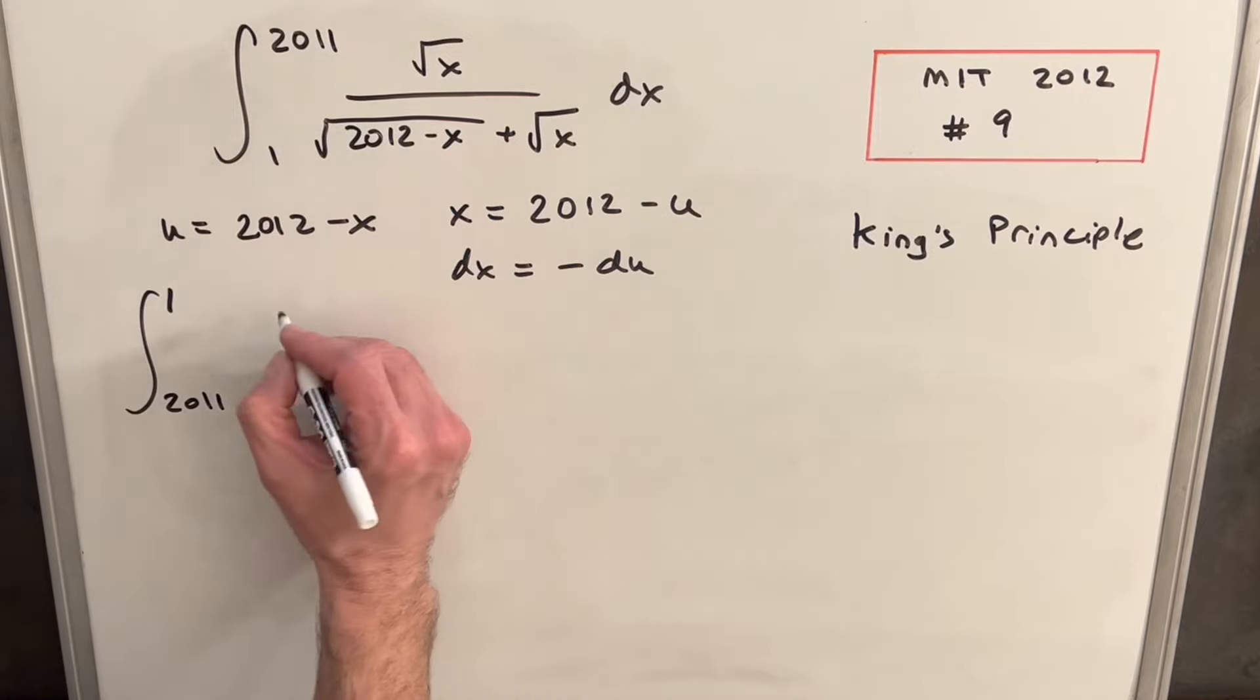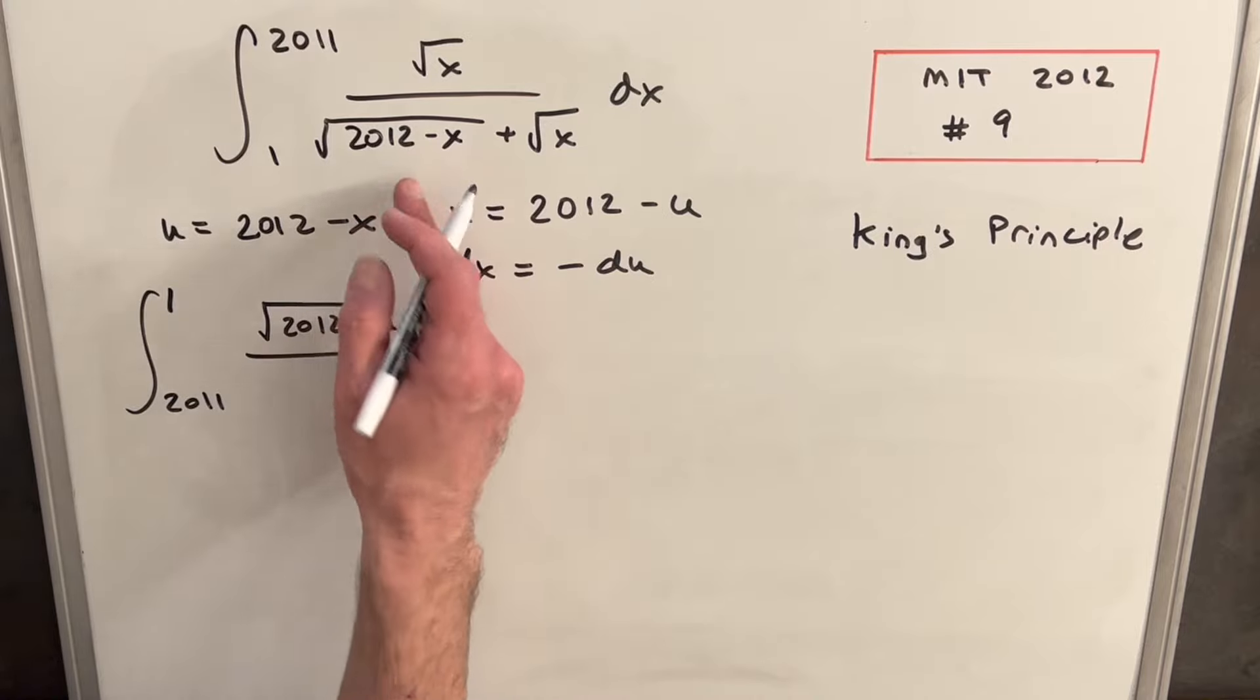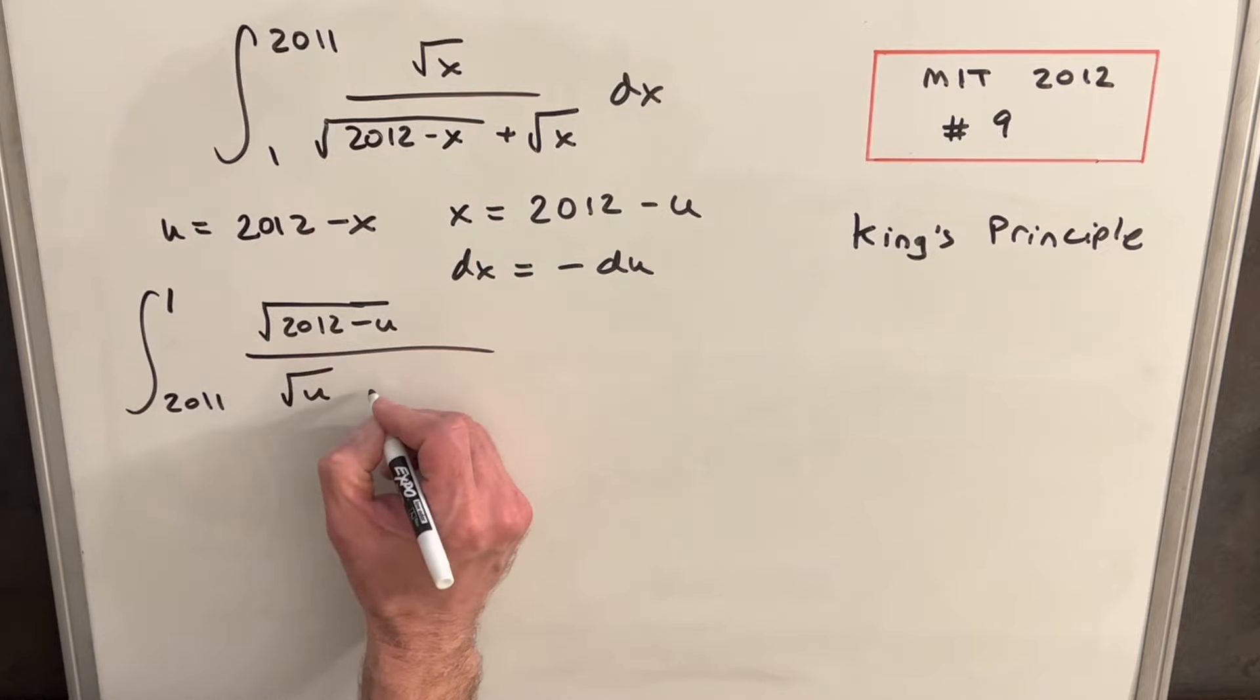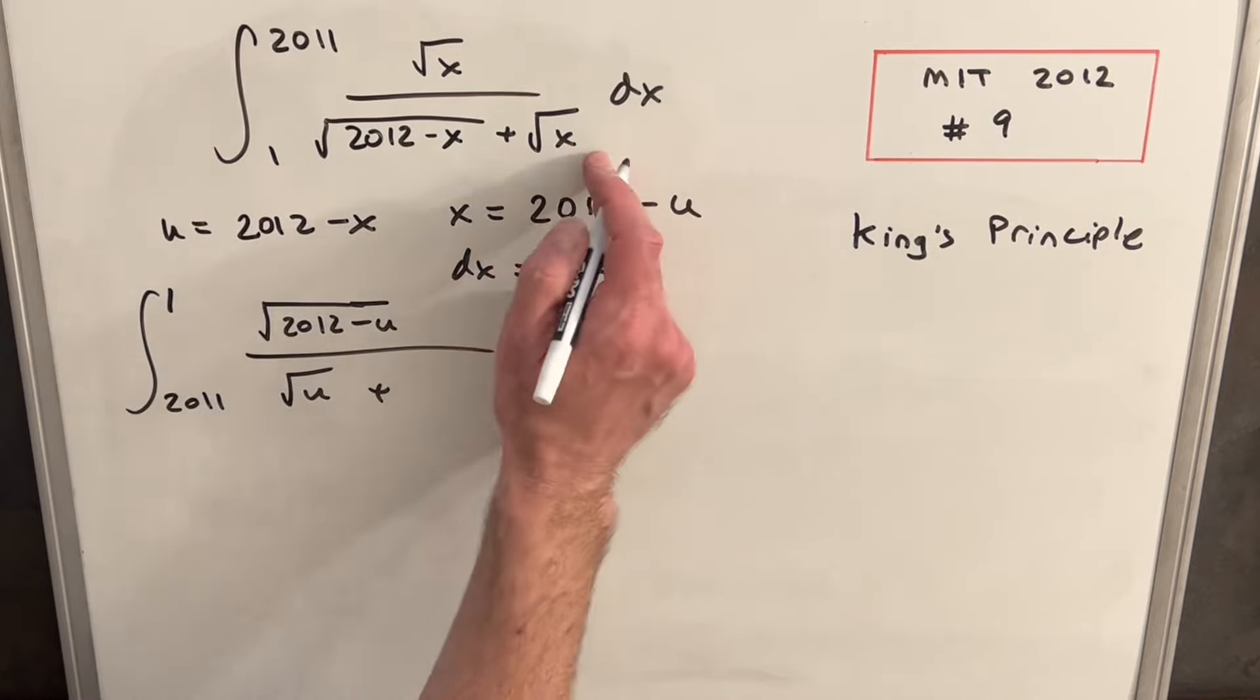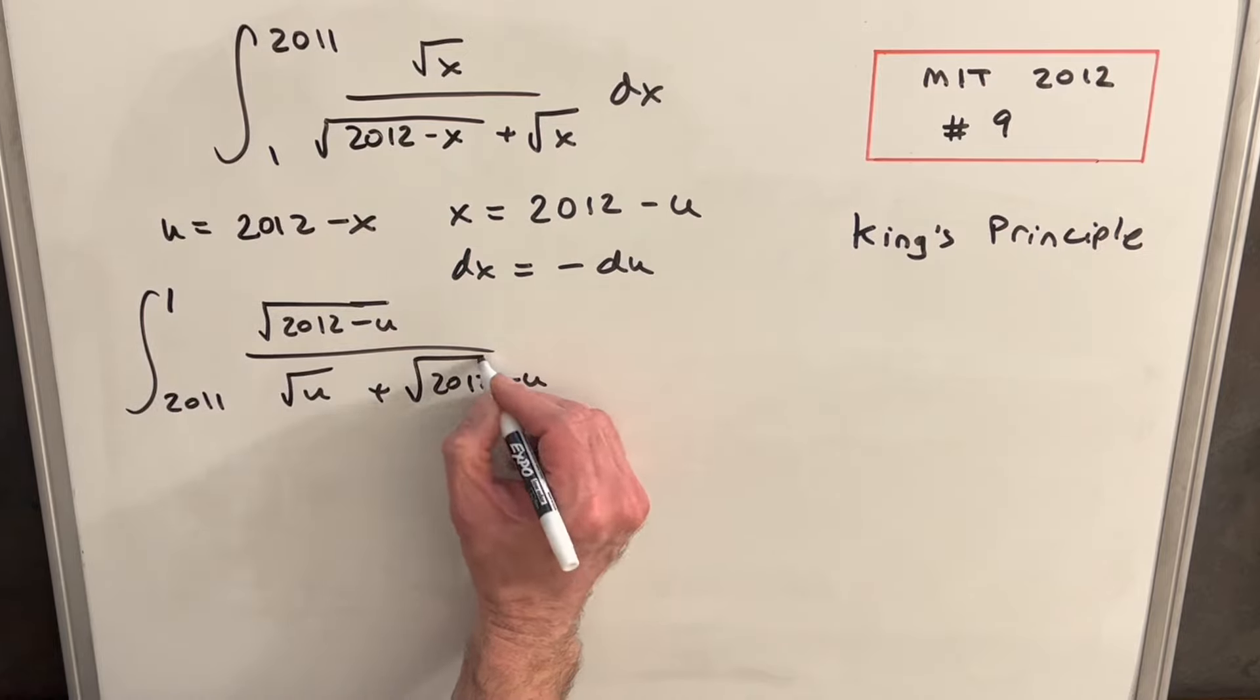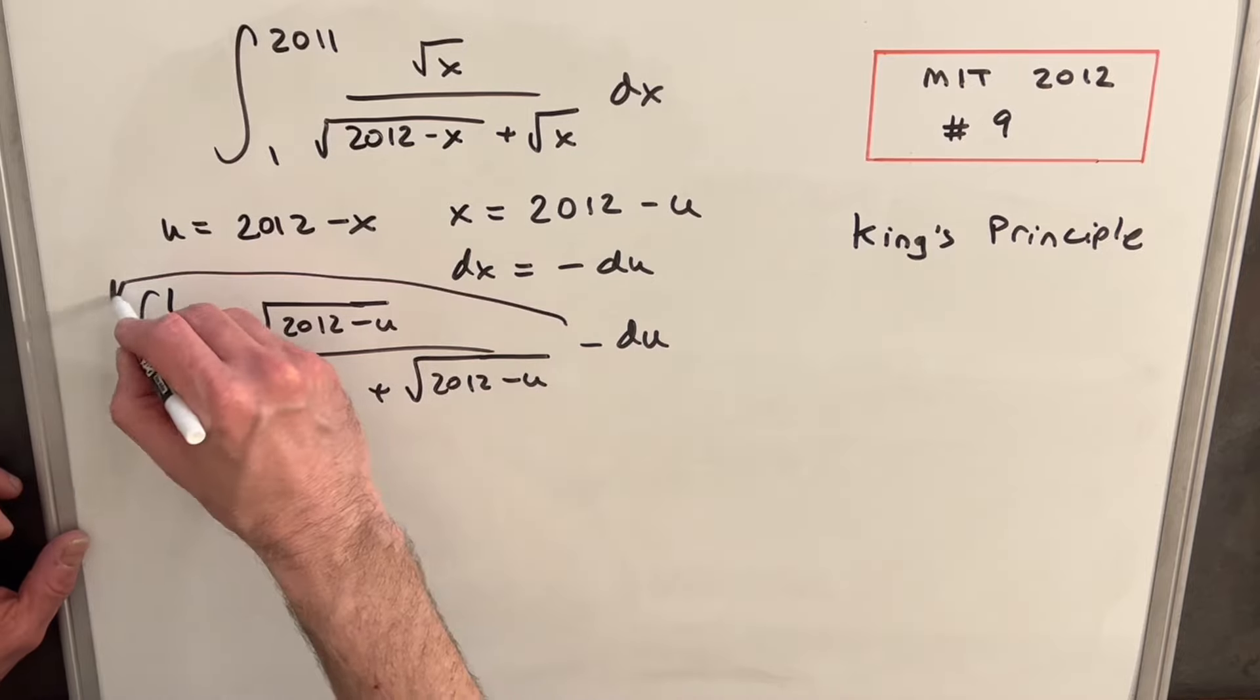Then in the numerator for square root of x, we're going to have square root of 2012 minus u. 2012 minus x is u, so we're going to have a square root of u here, plus, this square root x is the same as this one, so we're just going to have square root of 2012 minus u. Then I'm going to take this minus sign and bring it out front.